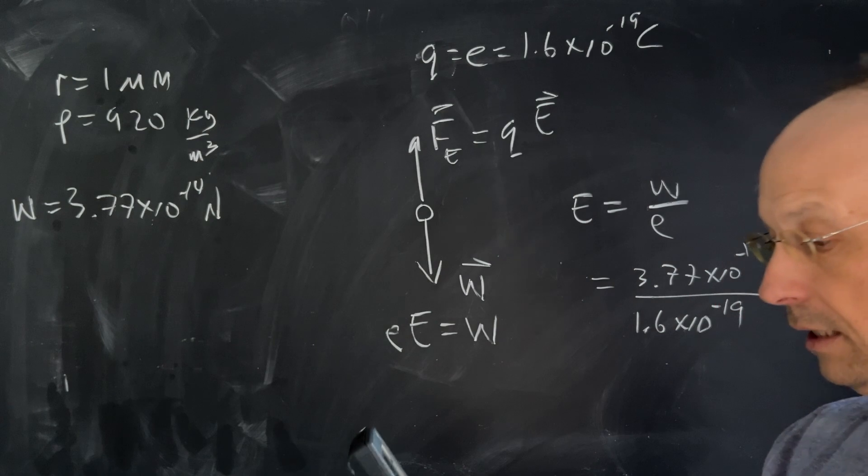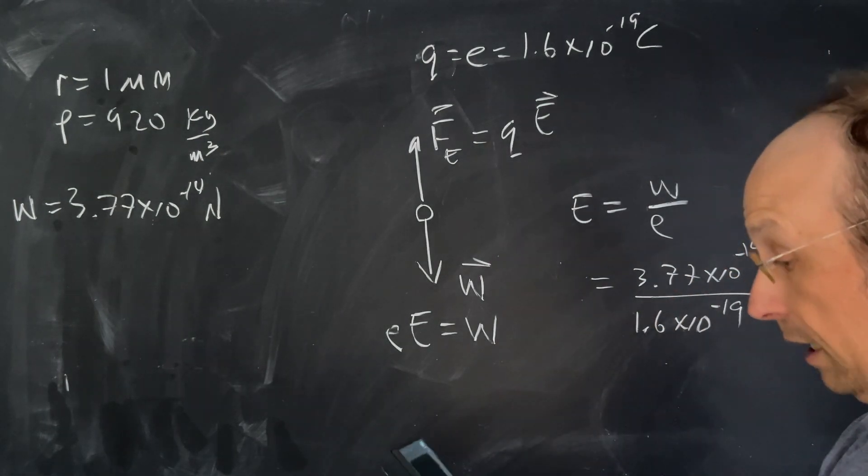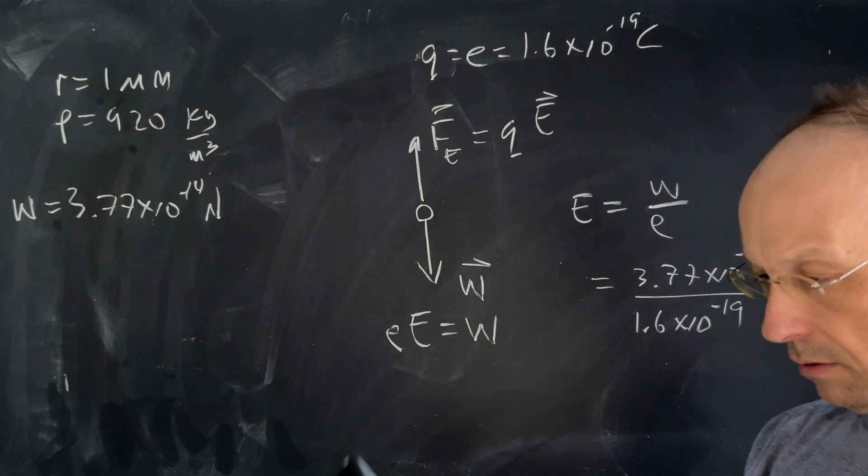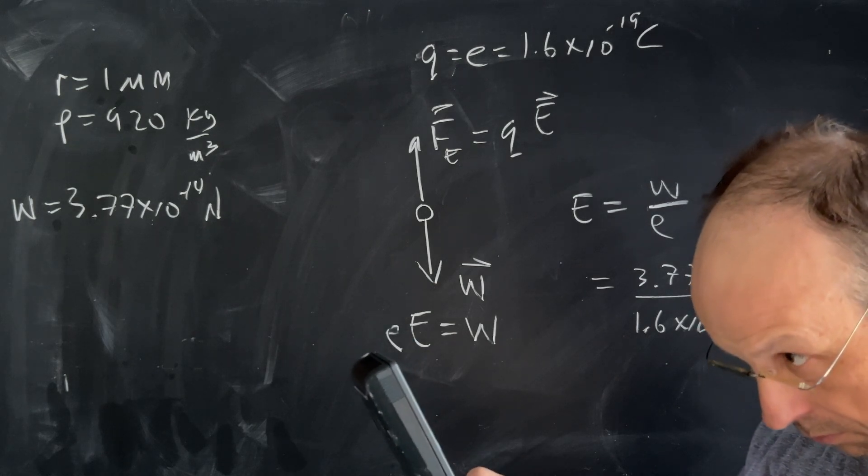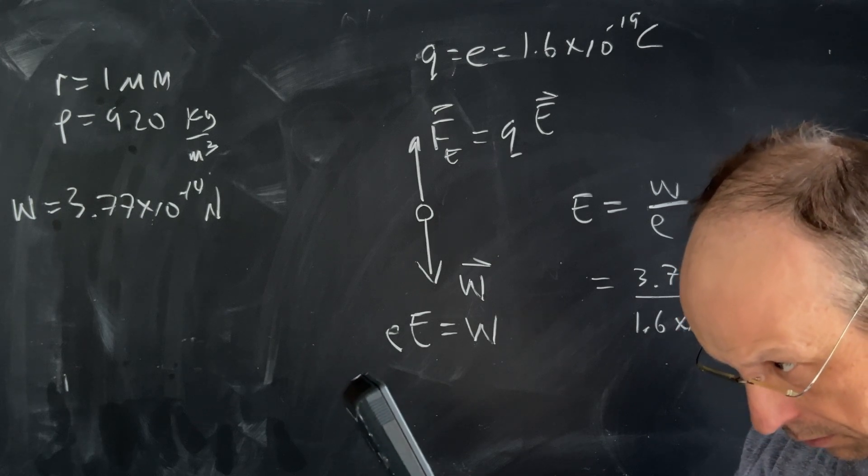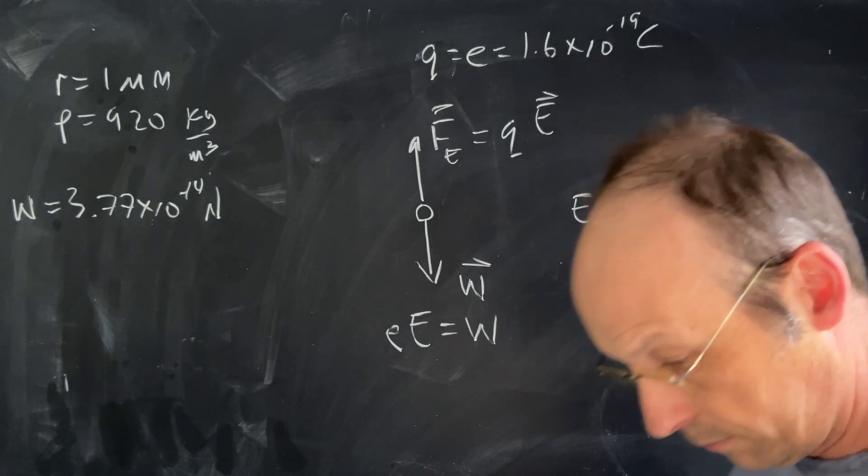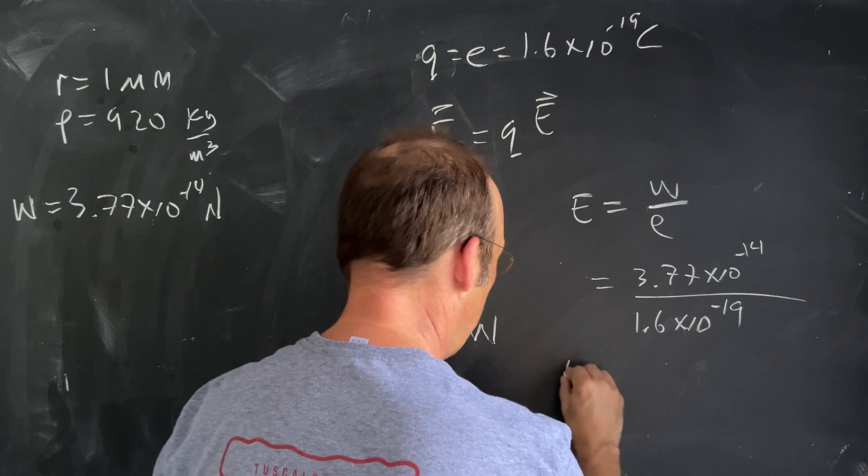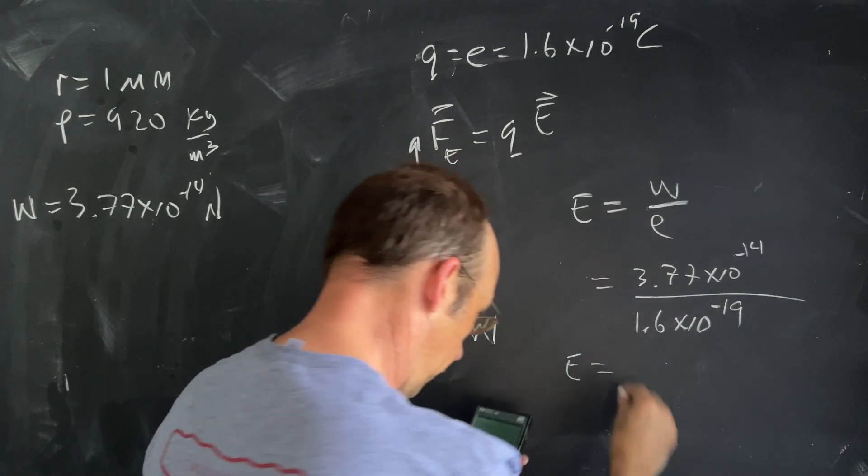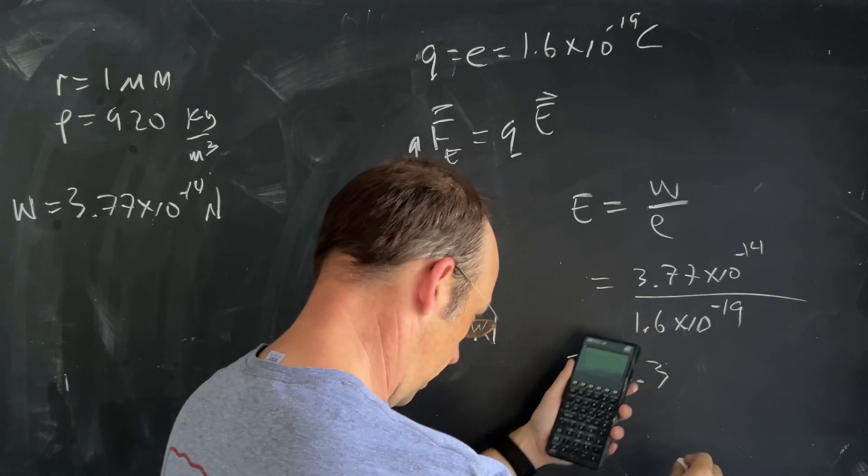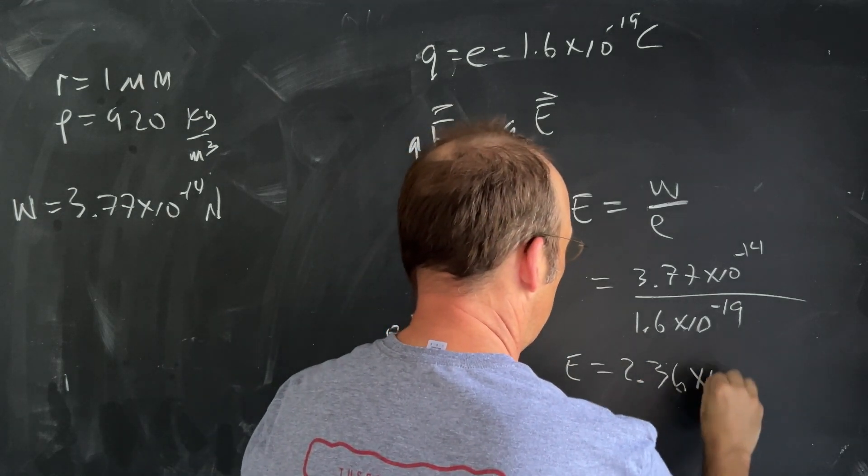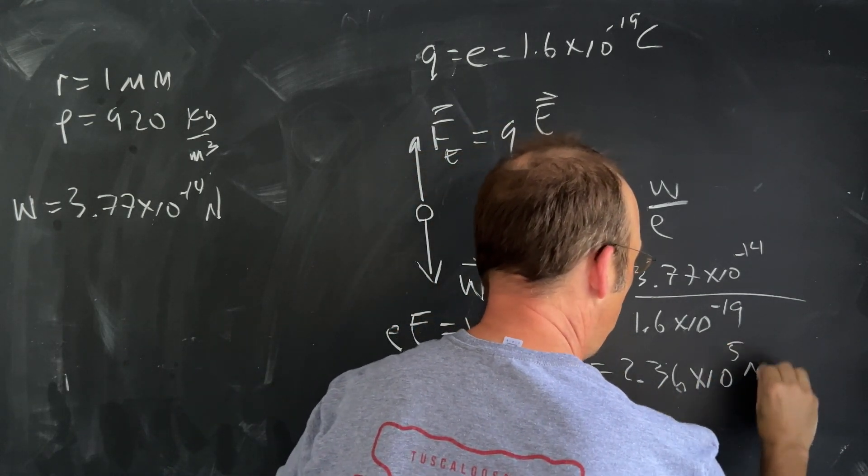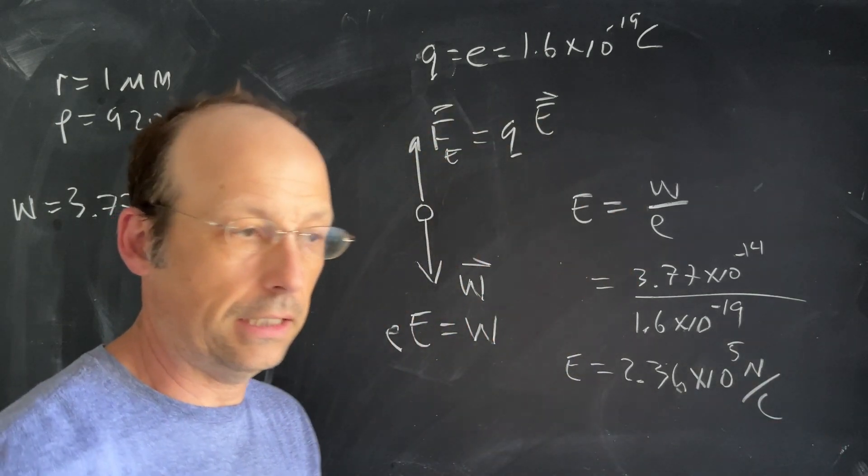I've got to write, I've got to stand this way. I already have that in there. I just need to divide by 1.6 times 10 to the negative 19. That gives me 2.36 times 10 to the 5 newtons per coulomb. So that's the electric field.